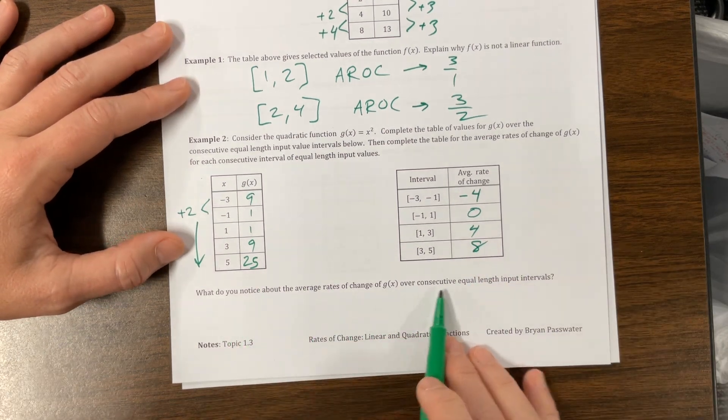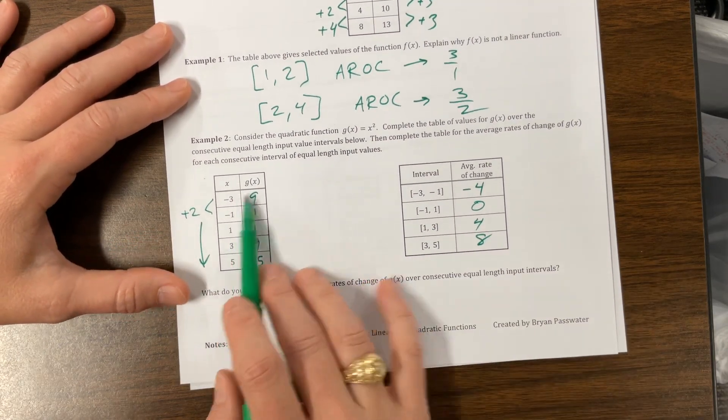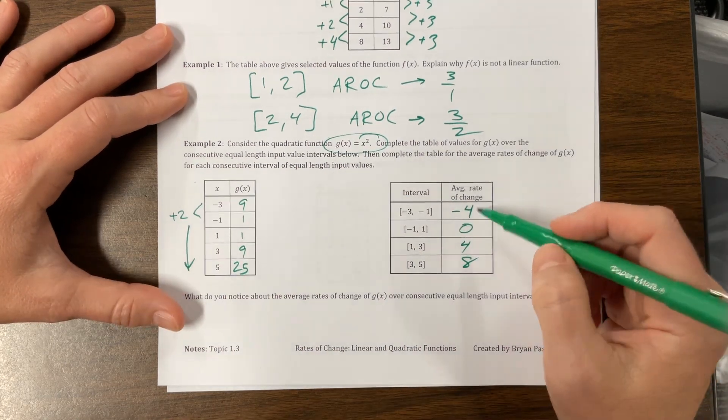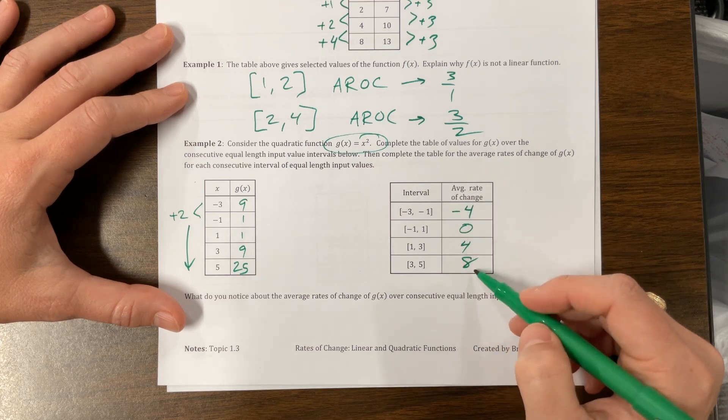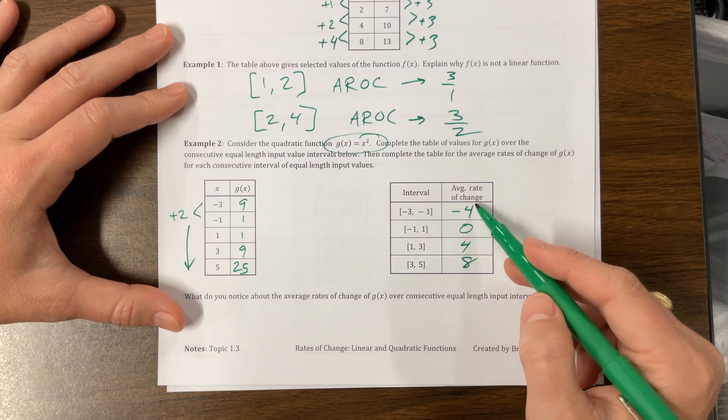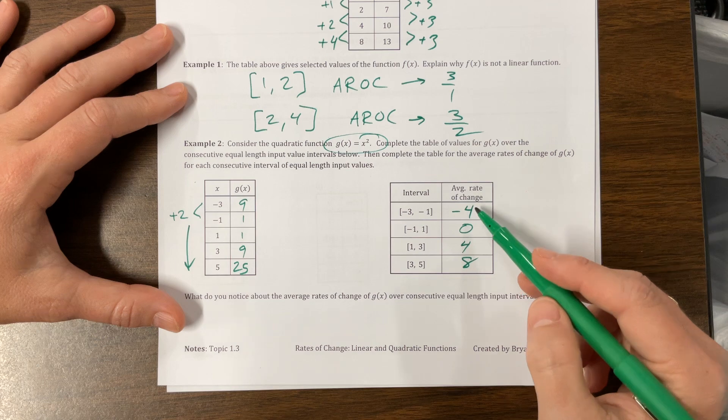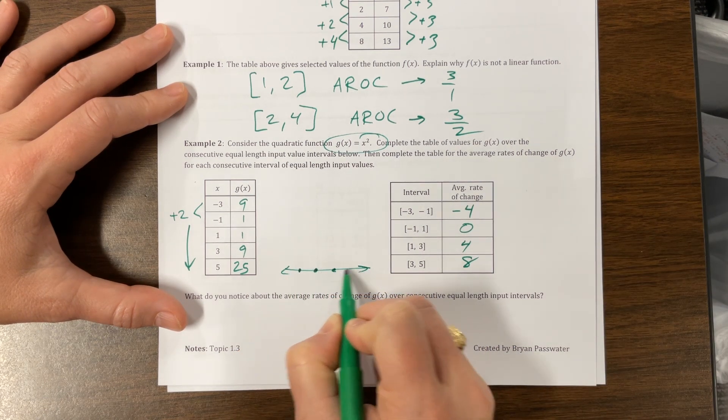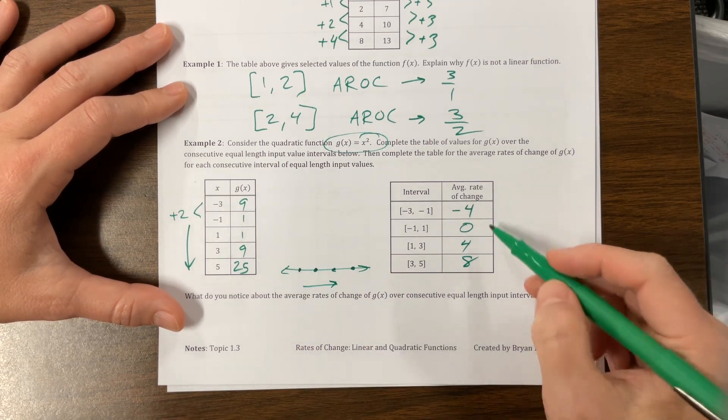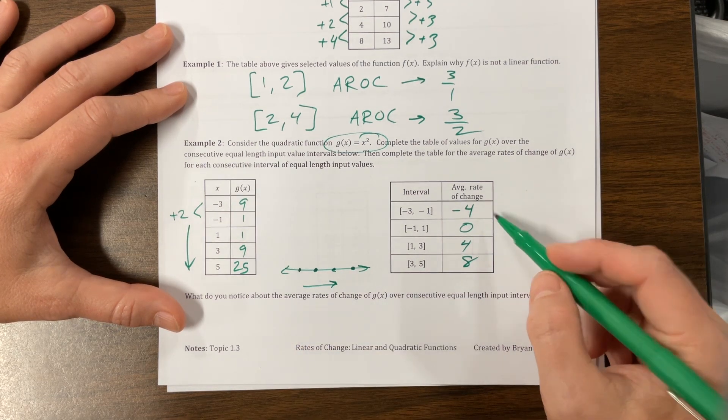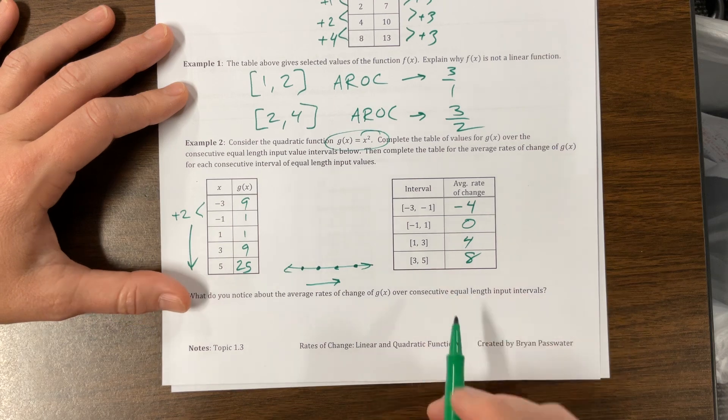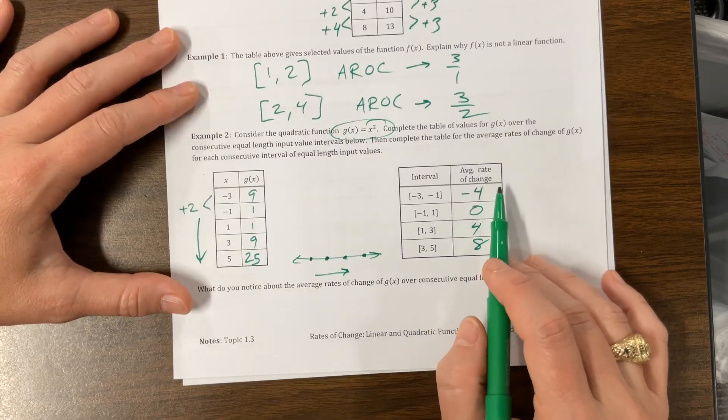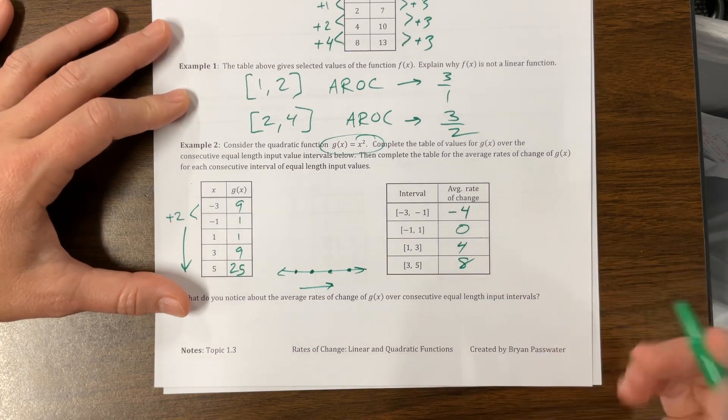What do you notice about the average rates of change? Notice on this one, they're giving us something that's quadratic. We found that their average rate of change is increasing. Those values are increasing. But the average rate of change is not a constant. If I had a constant average rate of change, then it would be linear. It's not.